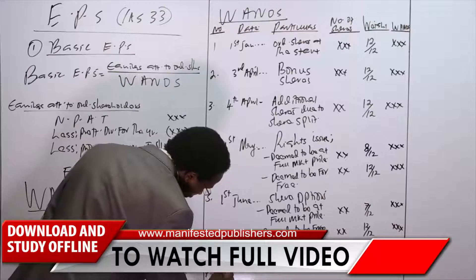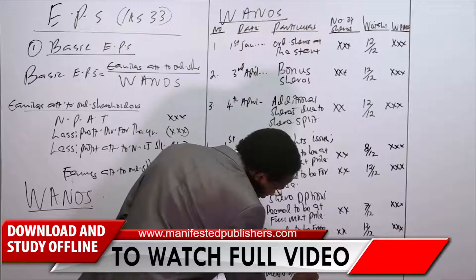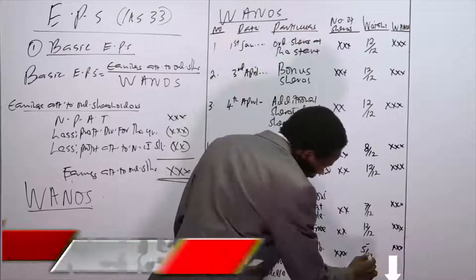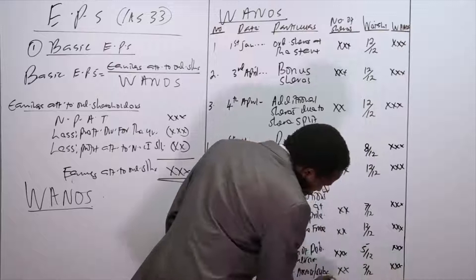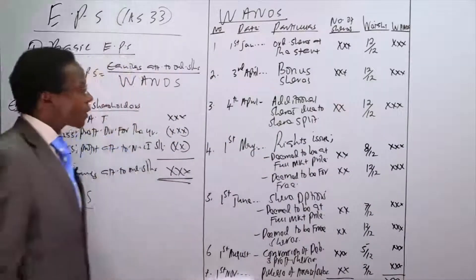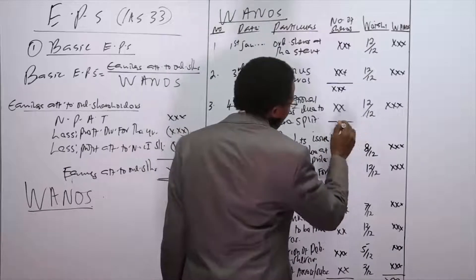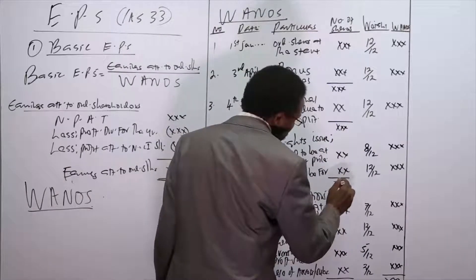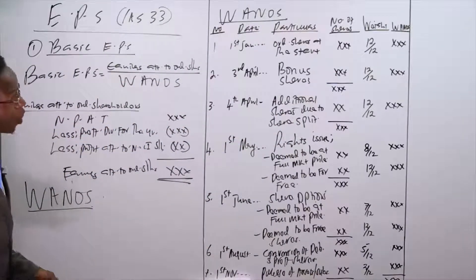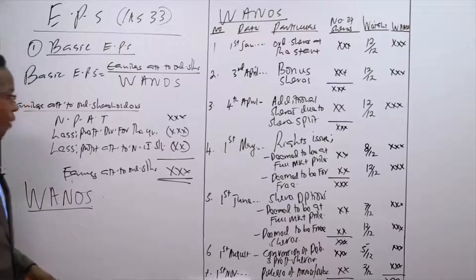Number seven: on first November there is a purchase of assets or a subsidiary by issue of shares. November and December is two months, so you take 2 over 12. Once you have all these, you can get the total number of shares. You may also require subtotals at various points. From all this you get the WANOS and compute your basic earnings per share.